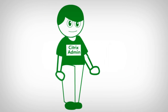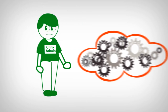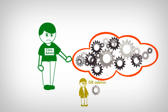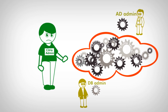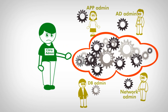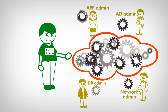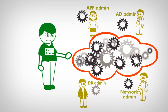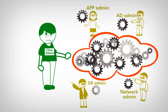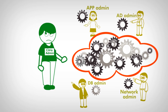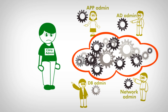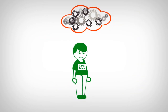Now, let's get back to our cogwheels. In most IT environments today, each cogwheel is managed by a different IT group with different admins and different monitoring tools. This means you don't have a single view of service performance and you end up with a lot of finger pointing. And as the Citrix admin, you get blamed.